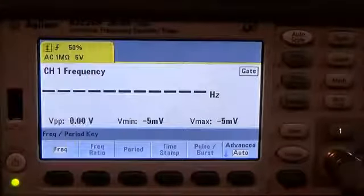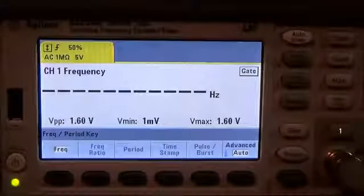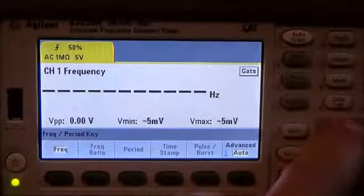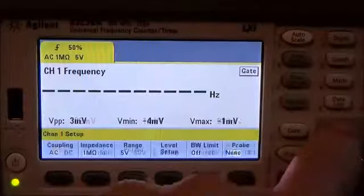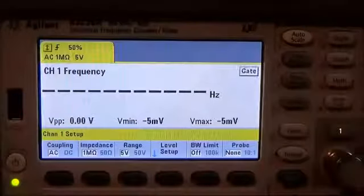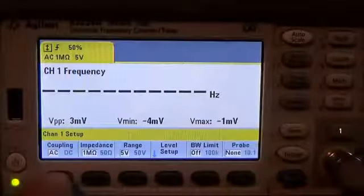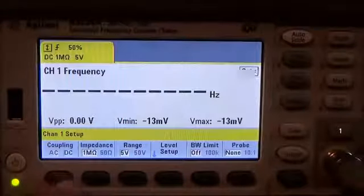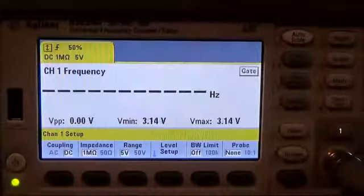By doing that we press channel 1 of the channel button. So press 1 here and then if you notice the soft keys here there's the coupling soft key. If we press that, that'll toggle between AC and DC. So we want to make sure it's DC.